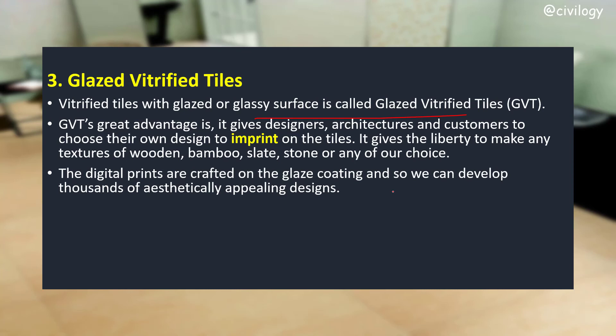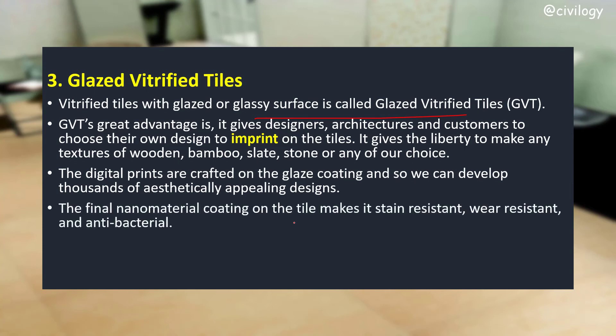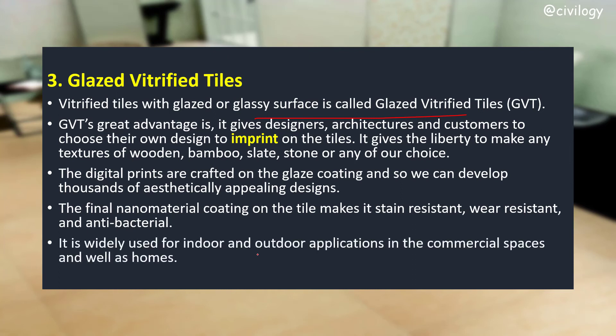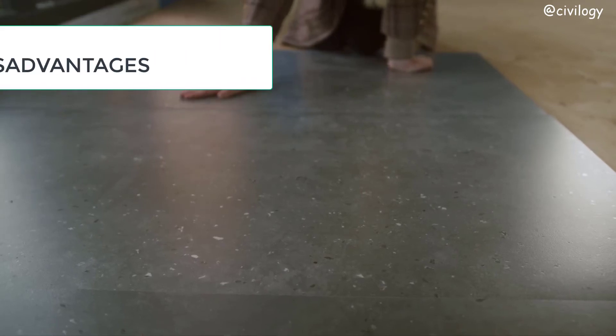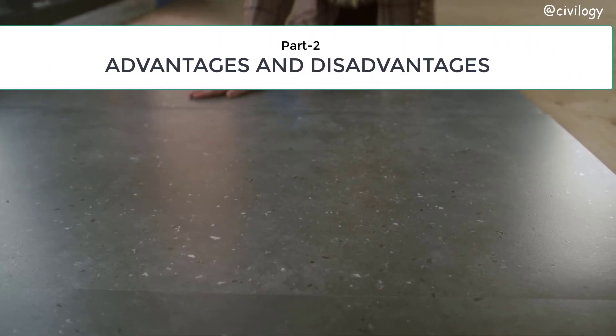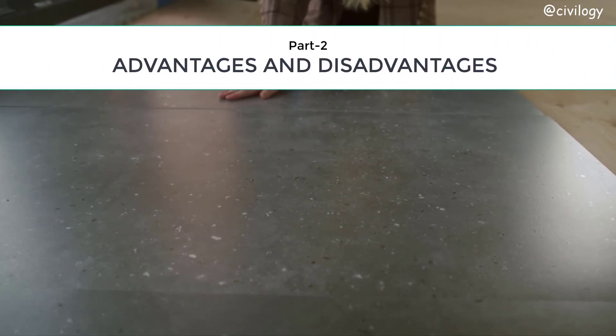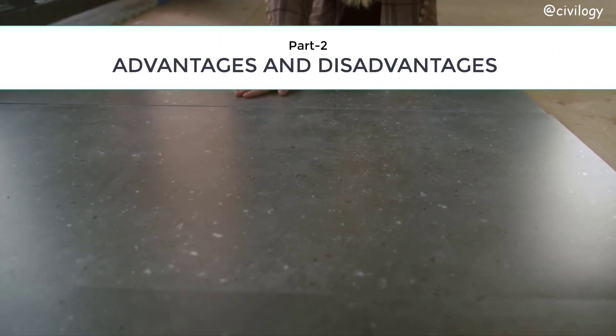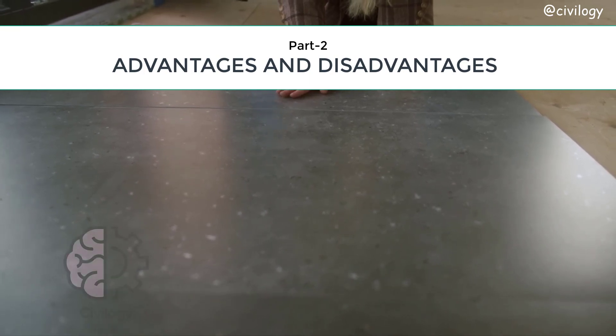The final nano material coating on the tile makes it stain resistant, wear resistant, and also antibacterial. GVT is widely used for both indoor and outdoor applications in commercial spaces as well as homes. Based on your needs, you can choose the best material among these three types. In part 2, we will discuss the advantages and disadvantages of vitrified tiles.